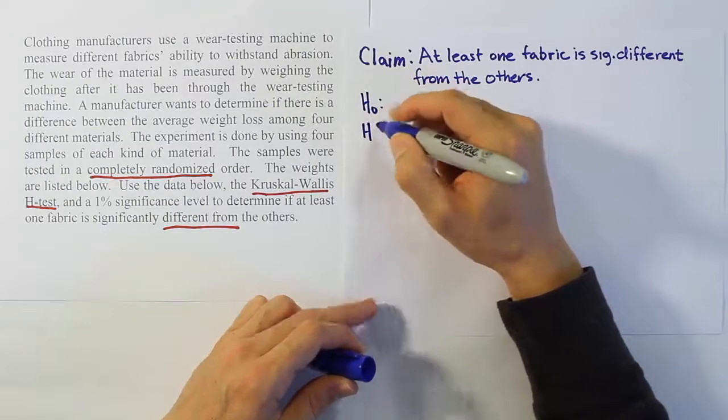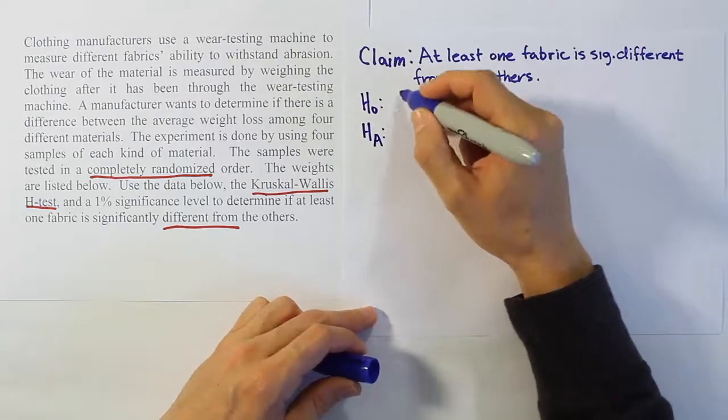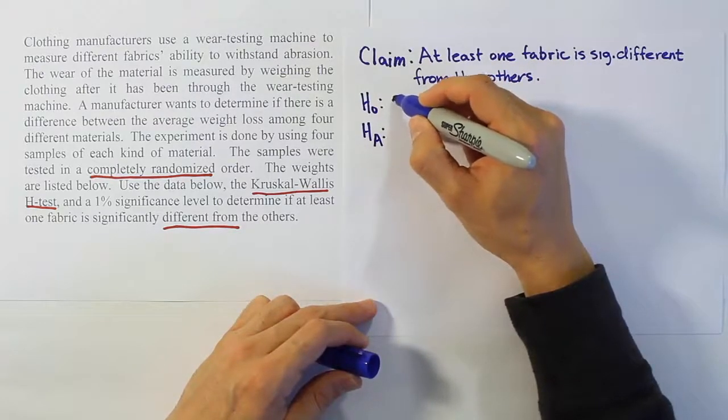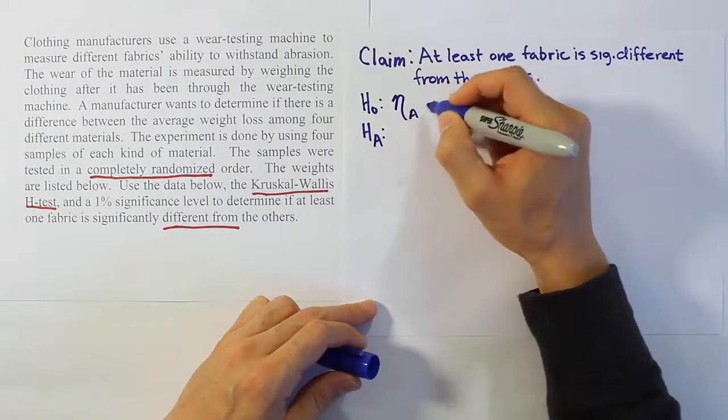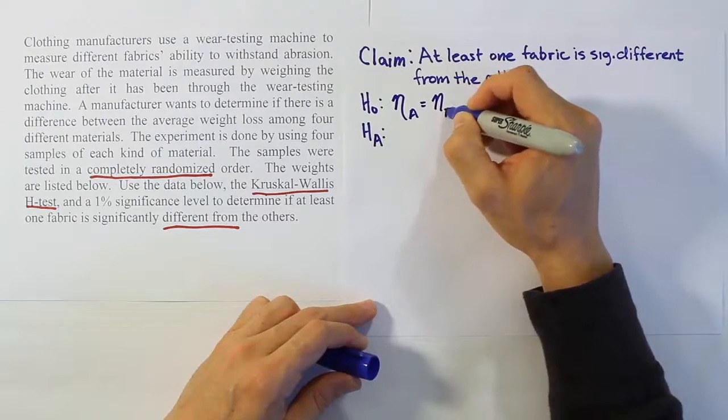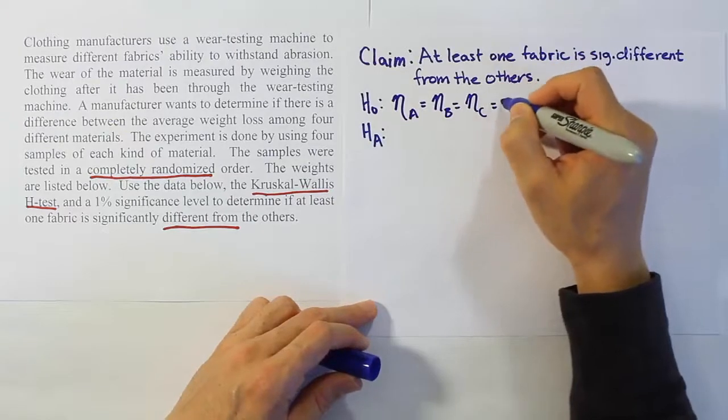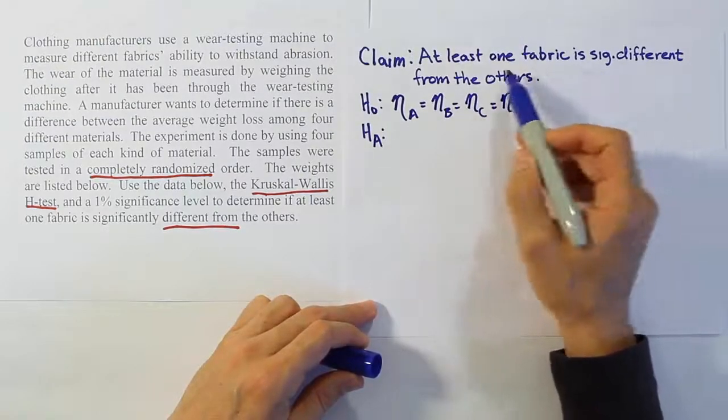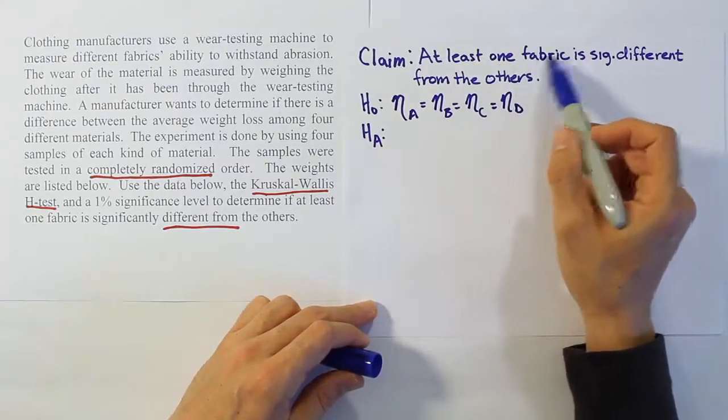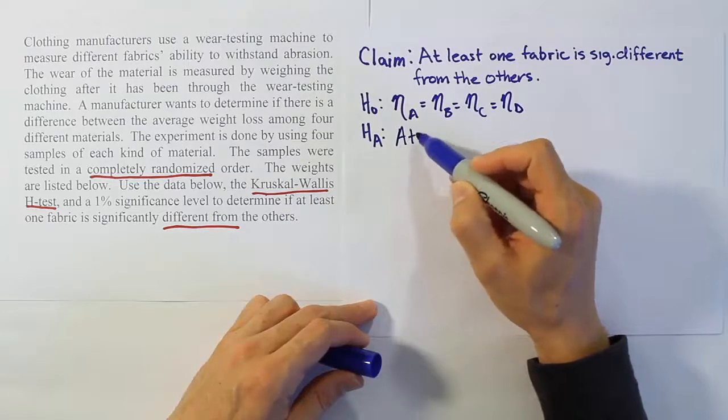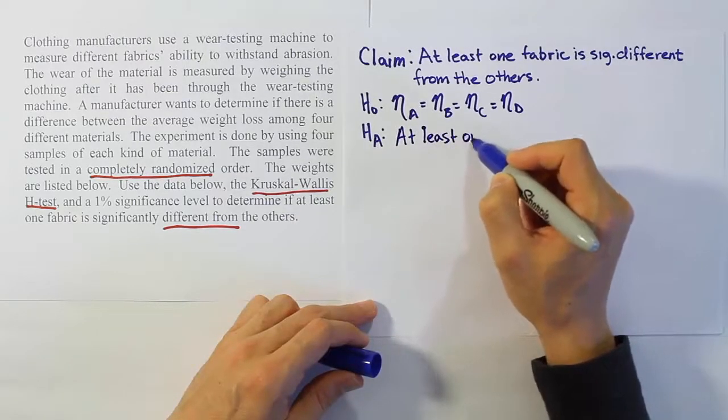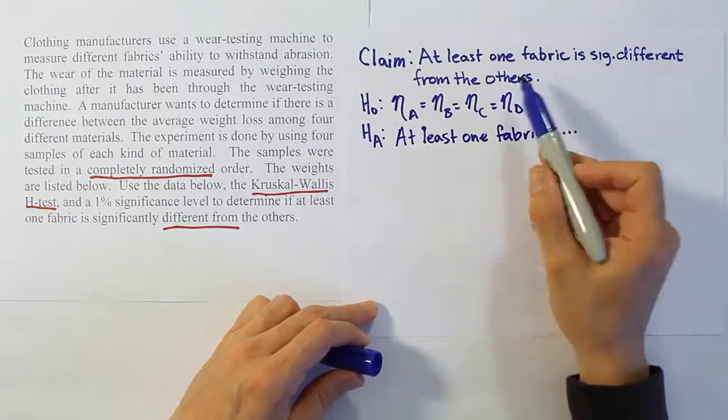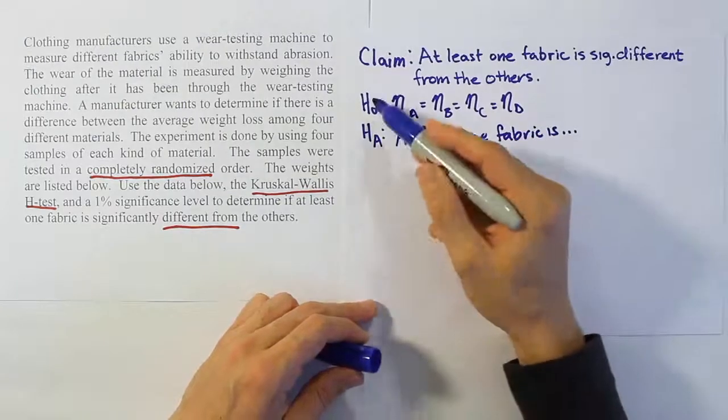Now, from there we want to express H0 and HA. If you remember the completely randomized design ANOVA procedure that we learned earlier, we would have mean A equals mean B equals mean C. Same kind of idea for our H0 for this problem, except we're not going to be talking about the mean. Because it's a nonparametric procedure, we're going to talk about the median. So the median for fabric A equals the median for fabric B equals the median for fabric C equals the median for fabric D. Then the HA is that at least one fabric is significantly different from the others.